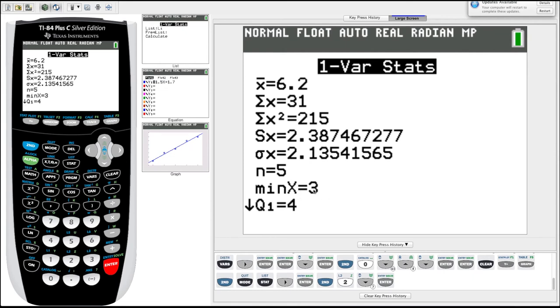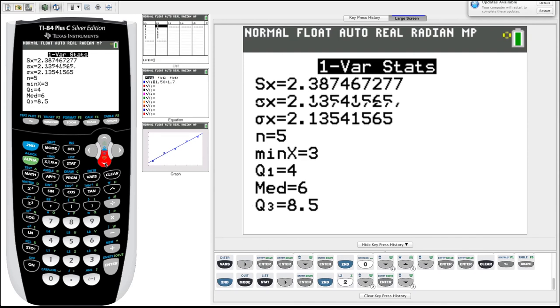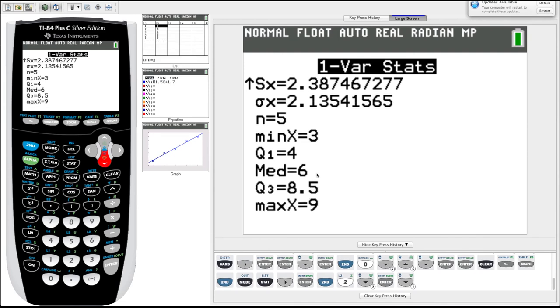We've got some more here. We got min x, tells us our minimum x value, which was three in our list two, if we recall. Q1 is quartiles, your first quartile. If we arrow down, as it's prompting us, it has a little arrow there. There's some more information. MED, median, our median value is six. Our quartile three value is 8.5. And our maximum value in that list was nine.